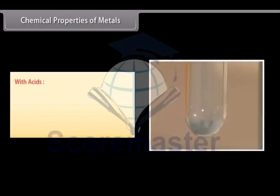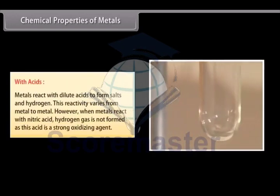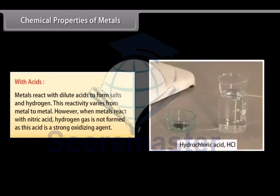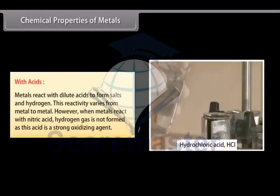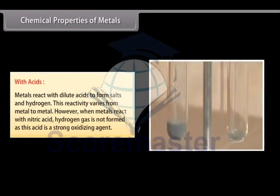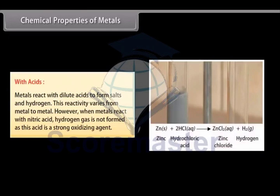With acids. Metals react with dilute acids to form salts and hydrogen. This reactivity varies from metal to metal. However, when metals react with nitric acid, hydrogen gas is not formed as this acid is a strong oxidizing agent.